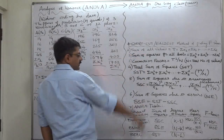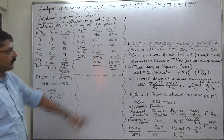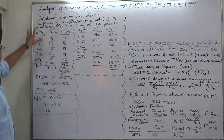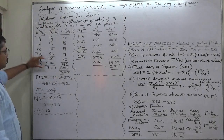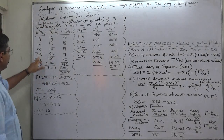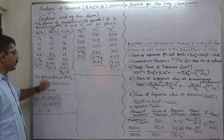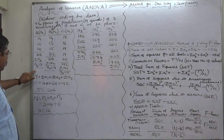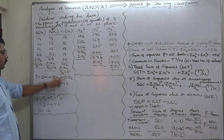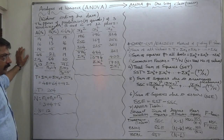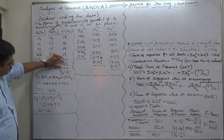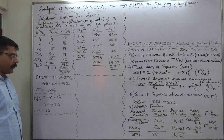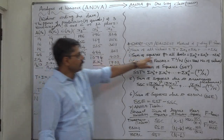The first step is the sum of all values. We have sigma x1 = 48, sigma x2 = 64, and sigma x3 = 92. The sample sizes are n1 = 3, n2 = 4, and n3 = 5. The summation of all three totals gives us grand total T = 204.